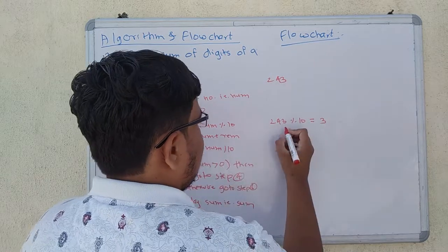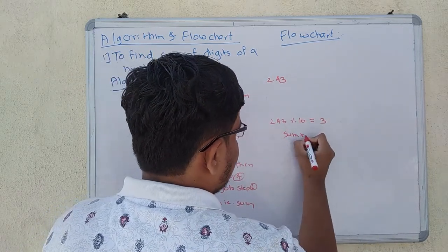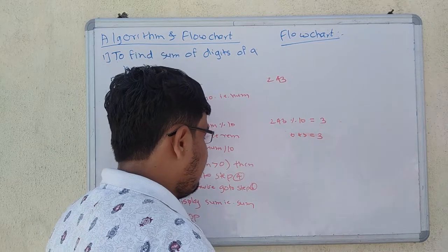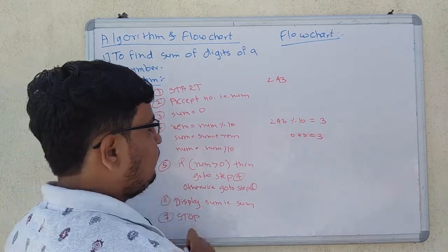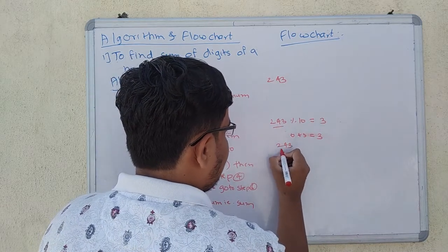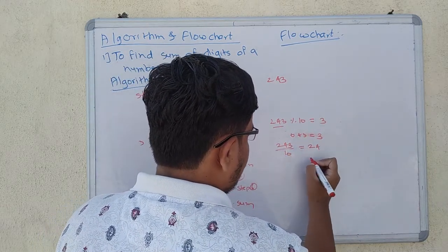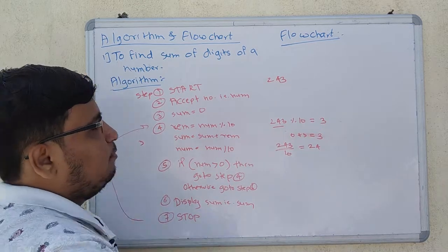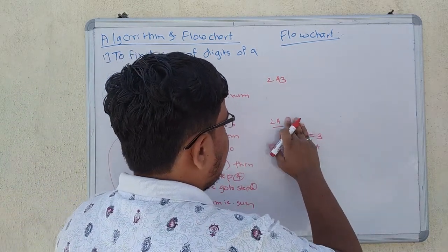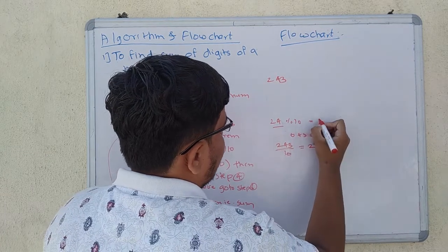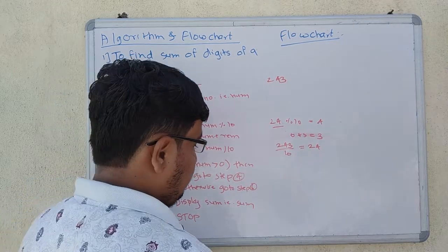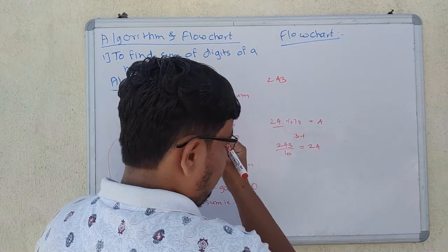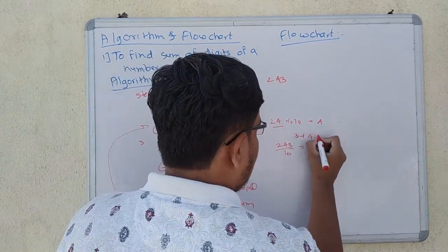Now I will add remainder to sum: 0 plus 3 equals 3, so my sum value is 3. After that, I divide the number by 10, giving 24. I check that 24 is greater than 0, so I go to step 4. Now 24 mod 10 gives remainder 4. My sum value is 3, my remainder value is 4, so my sum will be 7.